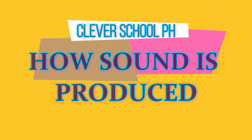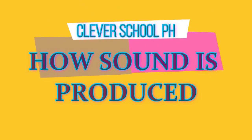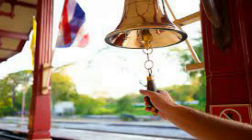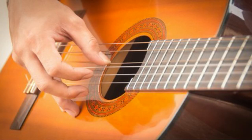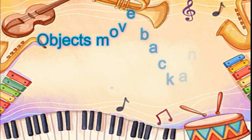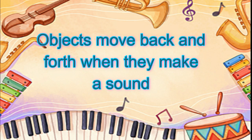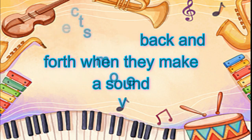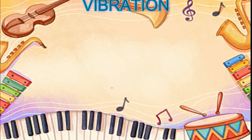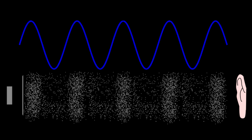How sound is produced: sound is a form of energy. When you ring the bell, pluck the strings of the guitar, and tap the drum, you hear different sounds. You observe that objects move back and forth when they make a sound. This movement is called vibration. You hear sound when things vibrate — without vibration, there will be no sound.